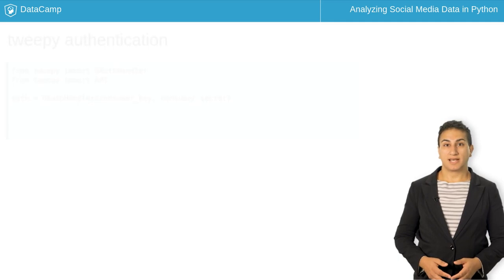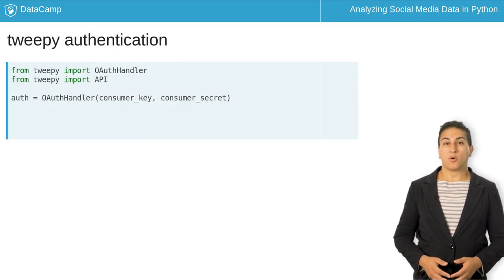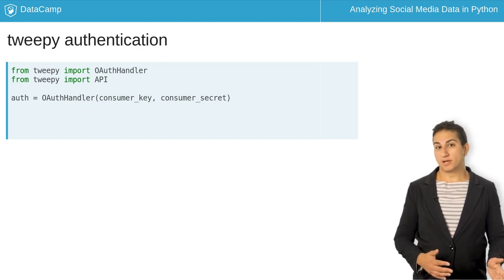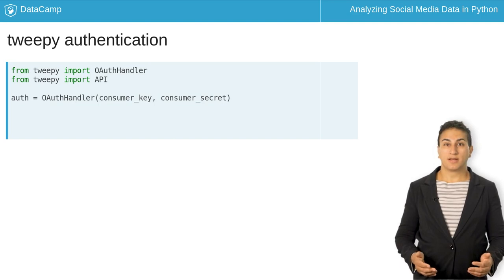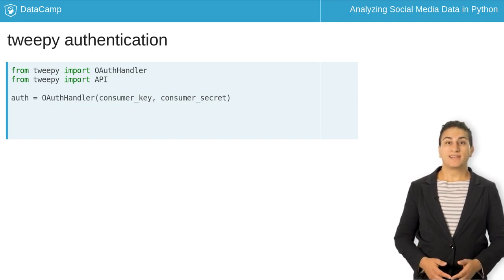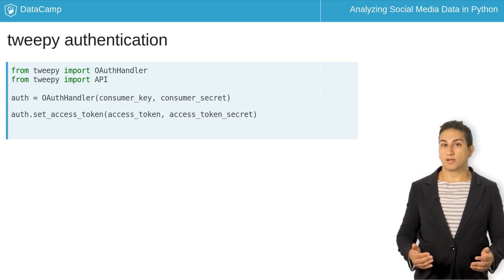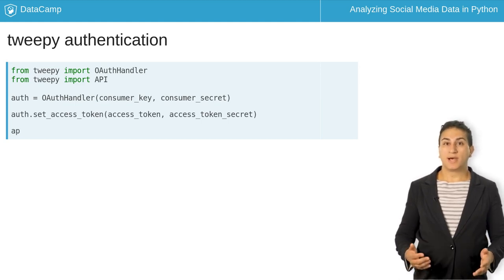We first must authenticate with Twitter. OAuth authentication, the authentication protocol which the Twitter API uses, requires four tokens which we obtain from the Twitter developer site: the ConsumerKey and ConsumerSecret, and the AccessToken and AccessTokenSecret. We pass the OAuth handler our ConsumerKey and ConsumerSecret, then set the AccessToken and AccessTokenSecret. Finally, we pass the auth object to the TwiPi API object.